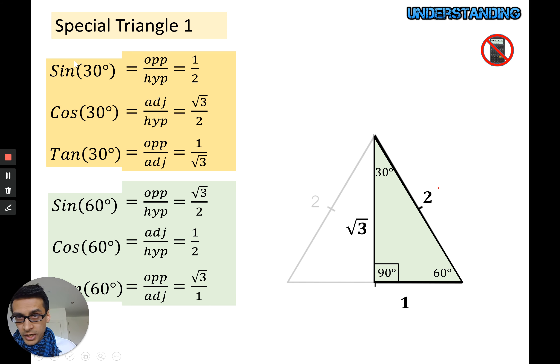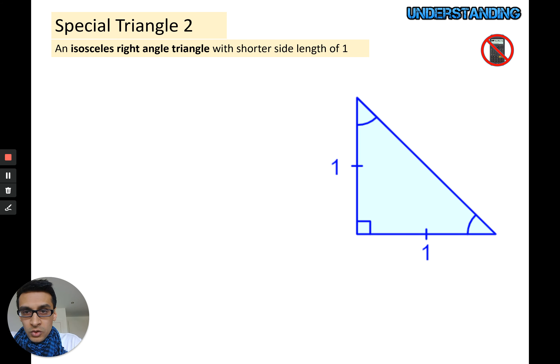That's special triangle one. We've worked out six exact trig values from this. Remember those ratios that we can use to work out missing angles and lengths. The second special triangle is an isosceles right angle triangle with shorter side length one. From this, starting from this as our base, we don't need to know anything else. We can work everything else out from this point here.